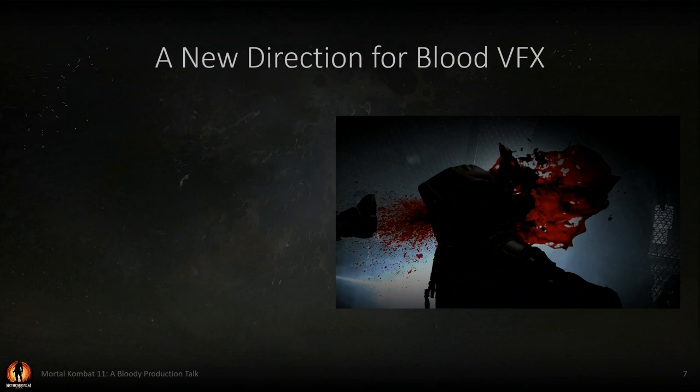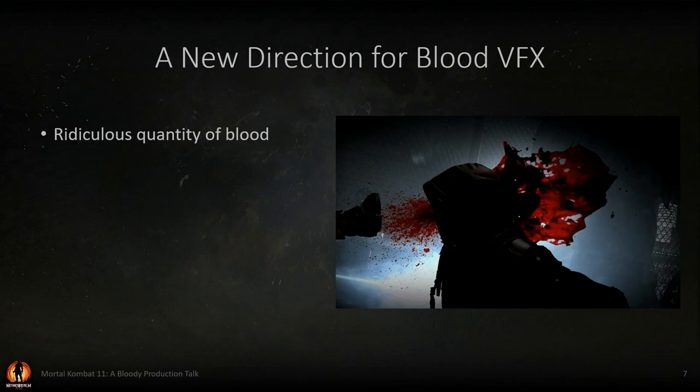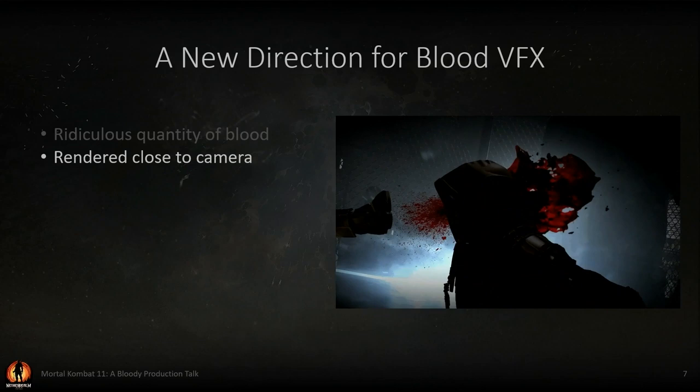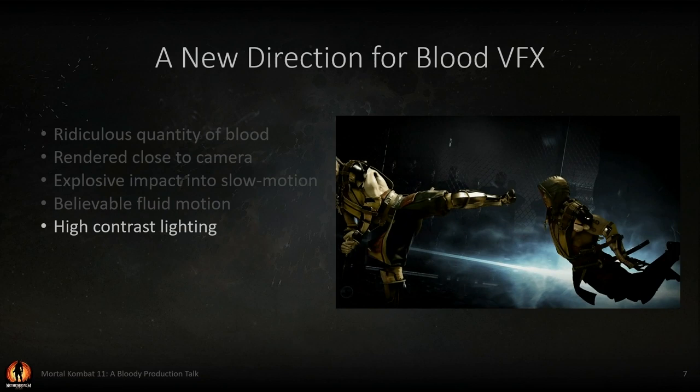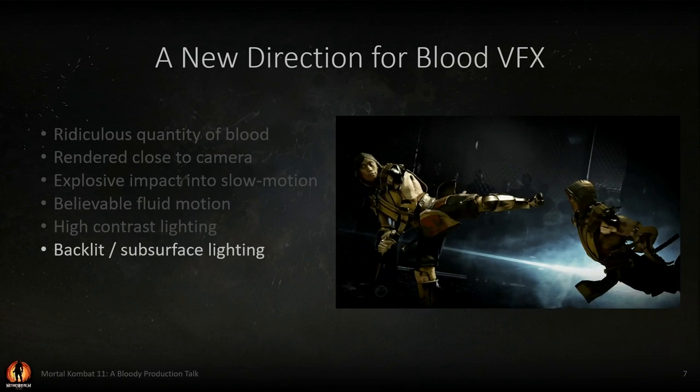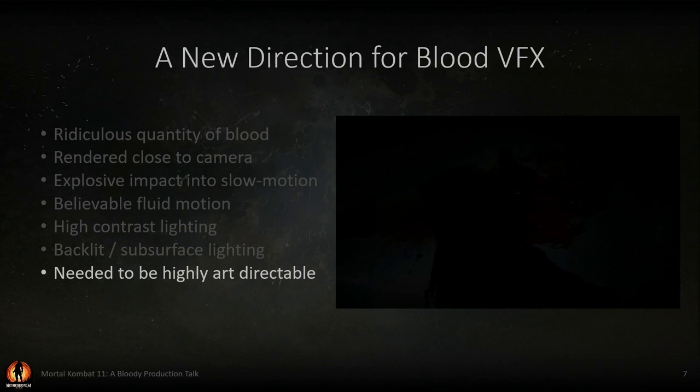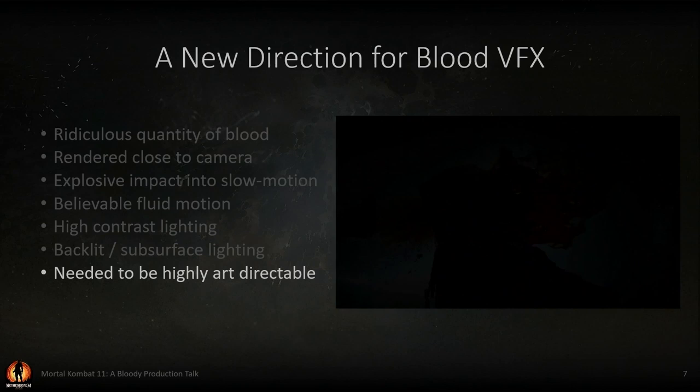Starting this journey, we were given a previs direction that we needed to try to hit. There are a number of key takeaways: just the MK ridiculous over-the-top quantity of blood, rendered close to the camera, with slow-motion choreography — an impact and then a slow-mo. We really wanted to focus on believable fluid motion, and then there's this high-contrast backlit lighting that gives the blood a subsurface look. And whatever solution we came up with really needed to be art directable, since fatalities are very heavily scrutinized. We needed a very flexible system.